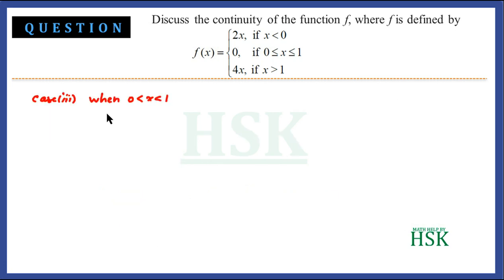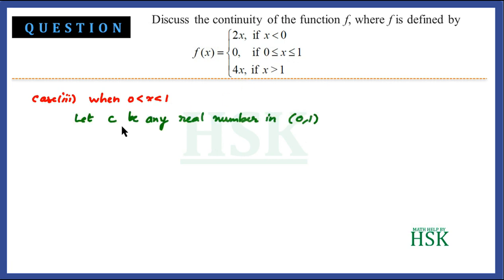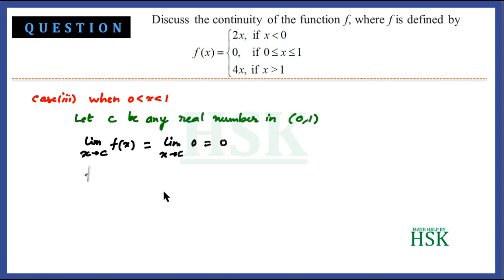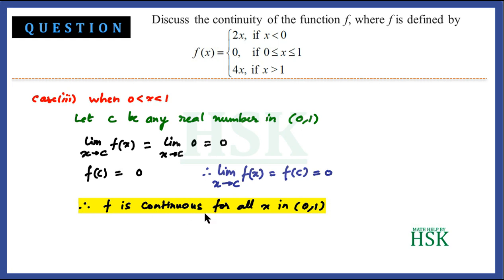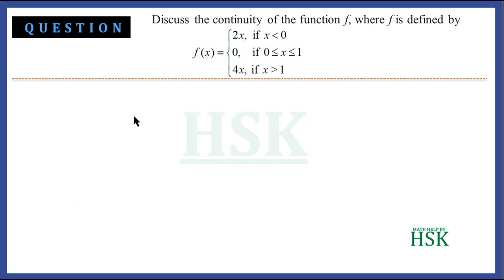For the third case, x in the open interval (0, 1): let c be any real number in this interval. The limit of f(x) as x tends to c equals the limit of 0, which is 0, since f(x) = 0 in this interval. And f(c) = 0. So the limit equals f(c) = 0, and therefore f is continuous for all x in this interval.